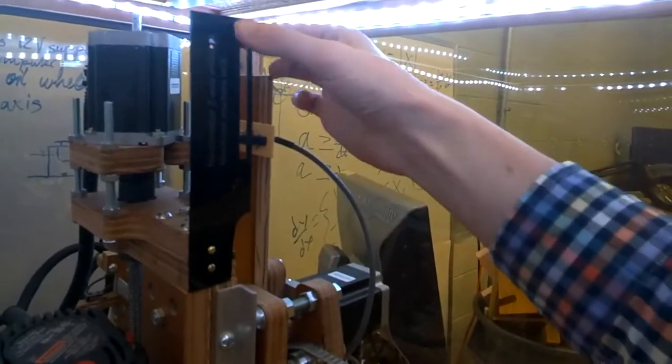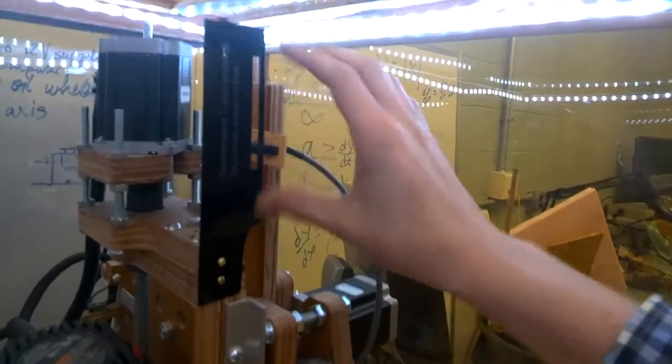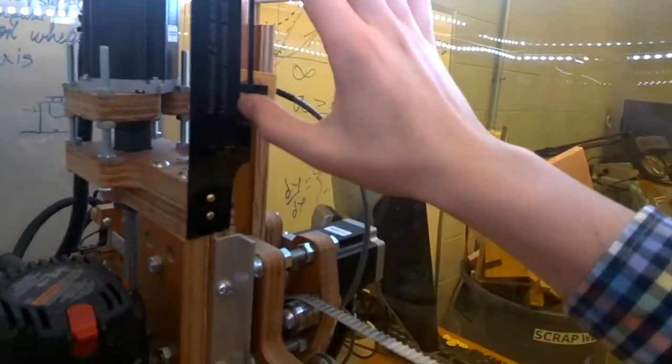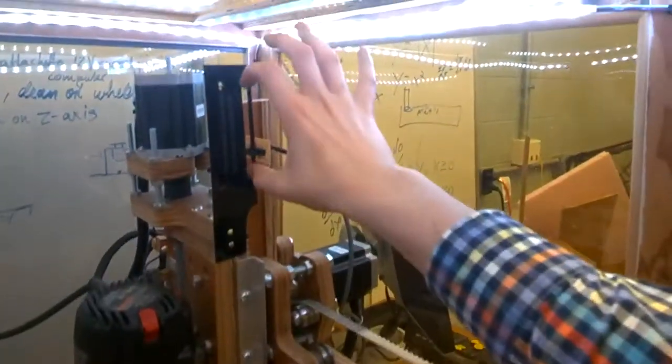As soon as it moves too high or too low, and this optical sensor is blocked by this black plastic, then it knows it's gone too far and turns the motors off, disengages everything. So that's your Z axis end stop.